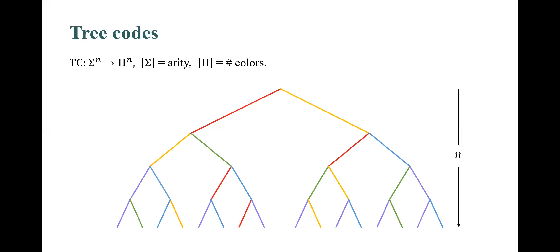When we think of a tree code as a mapping, the arity of the tree represents the size of its input alphabet sigma, and the number of colors represents the size of its output alphabet. Here in the illustration, the tree code is binary and has 5 colors.